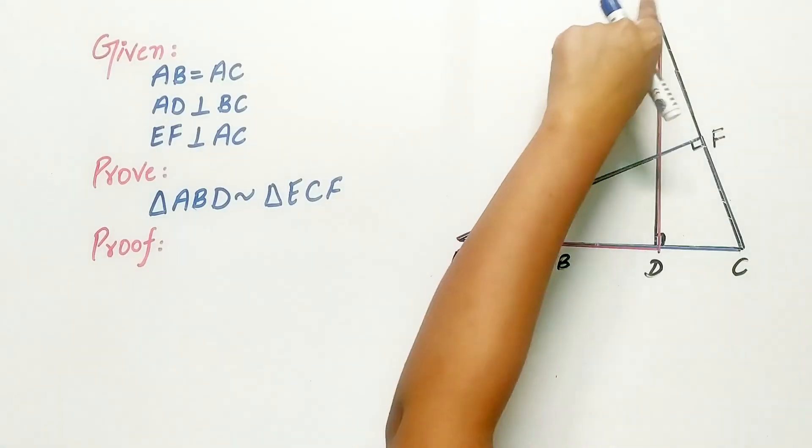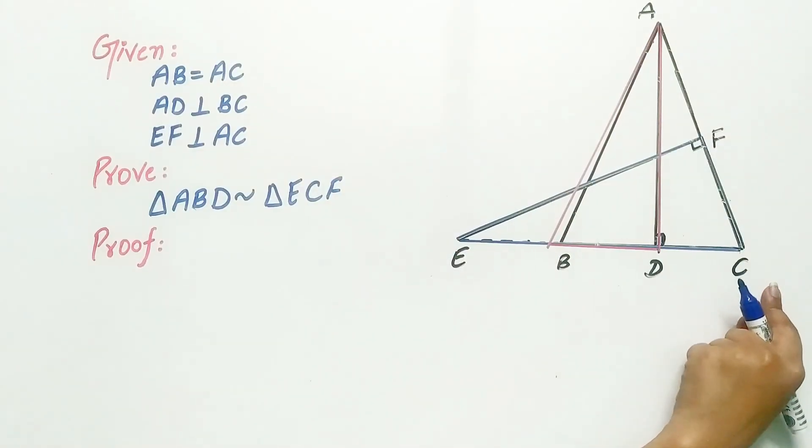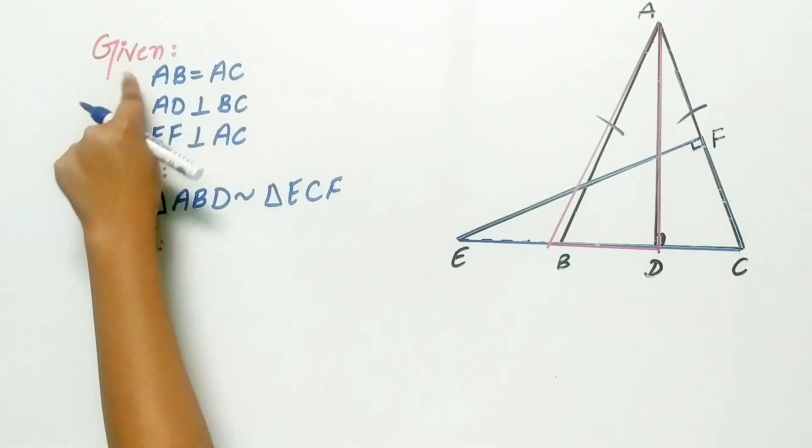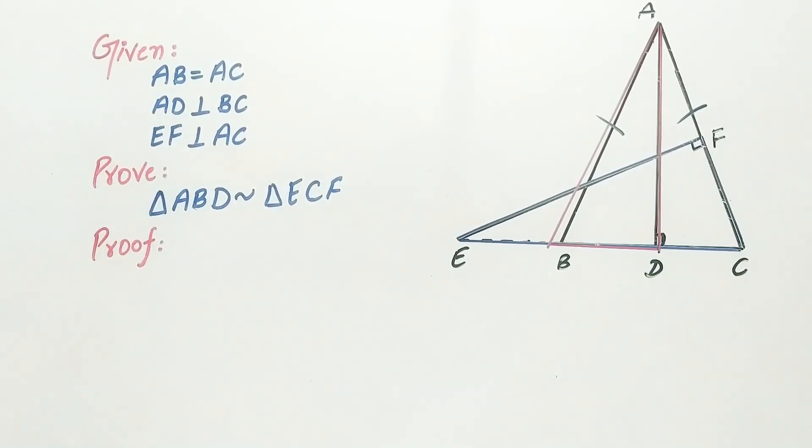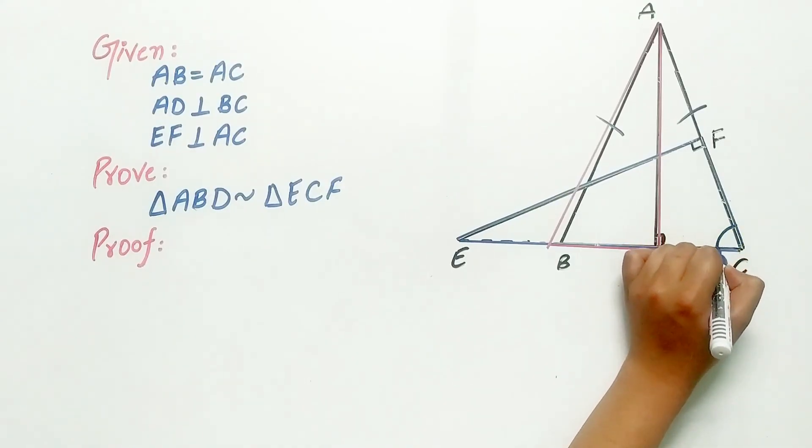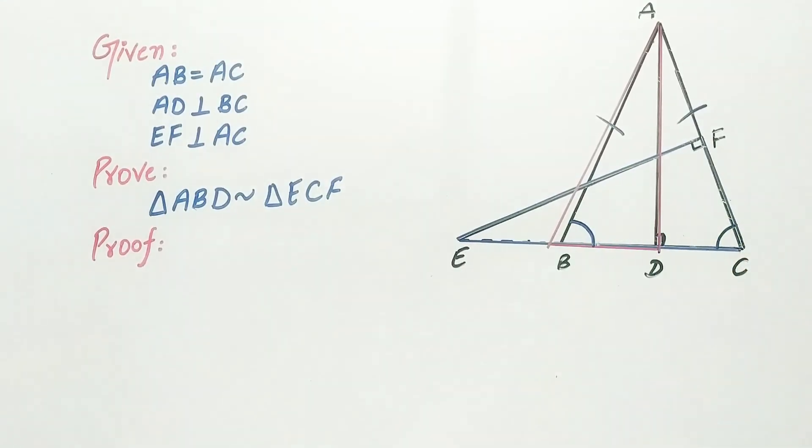So it's given to us that ABC is an isosceles triangle, that means AB is equal to AC. We know that angles opposite to equal sides of a triangle are equal, that means angle C is equal to angle B.